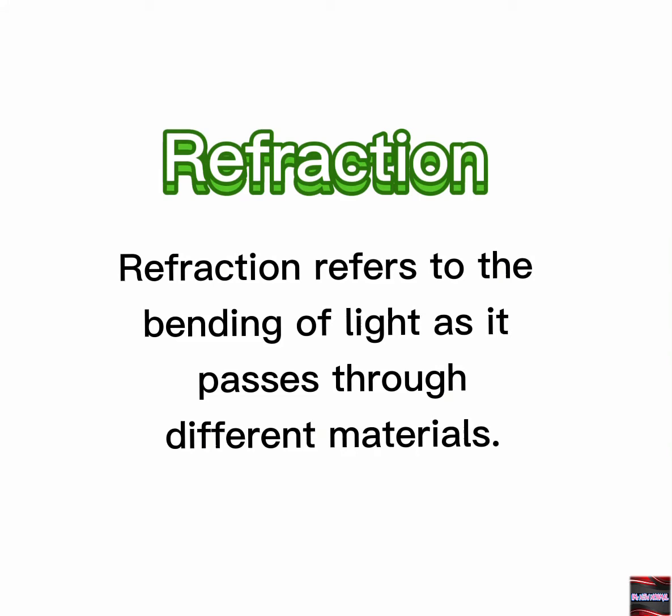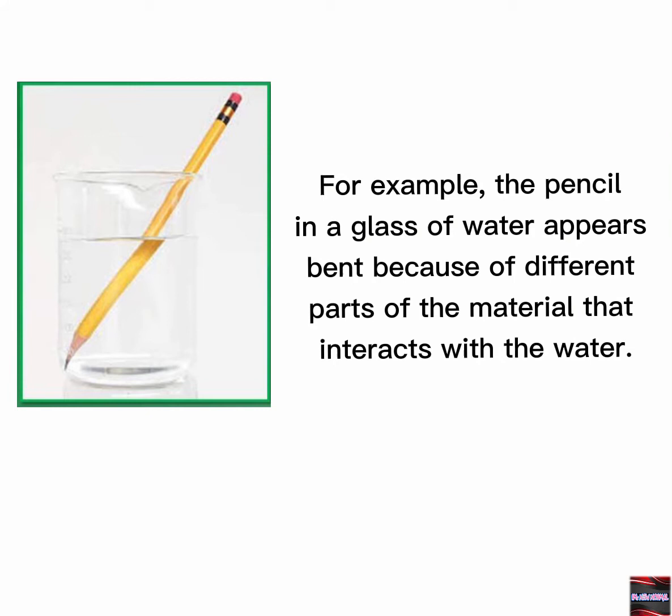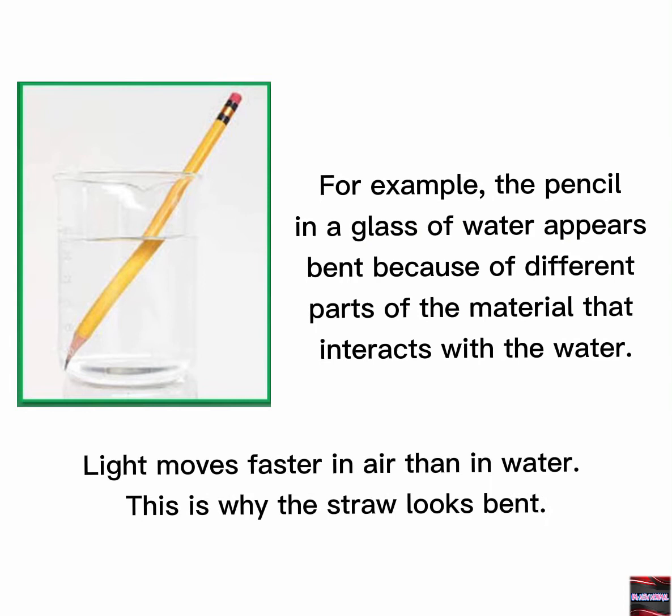Refraction. Refraction refers to the bending of light as it passes through different materials. For example, the pencil in a glass of water appears bent because of the different parts of the material that interact with the water. Light moves faster in air than in water. This is why the straw looks bent.